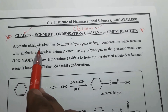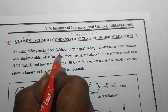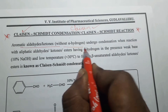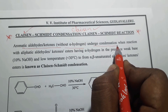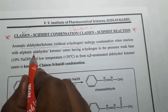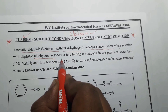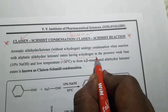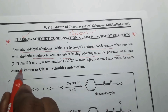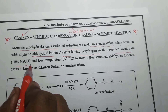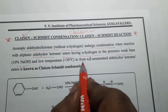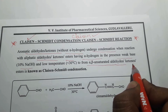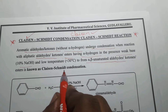According to the Claisen reaction, aromatic aldehydes or ketones without alpha-hydrogens undergo condensation when reacted with aliphatic aldehydes, aliphatic ketones, or aliphatic esters having alpha-hydrogens, in the presence of a weak base at low temperature, to give alpha-beta unsaturated aldehydes, ketones, or esters. That is known as Claisen-Schmidt condensation.